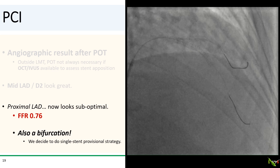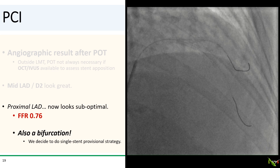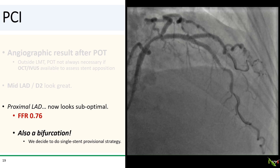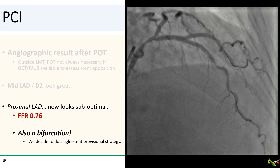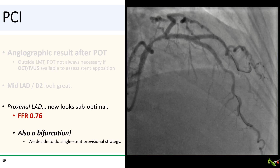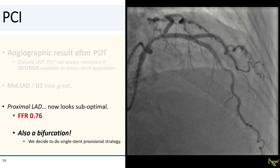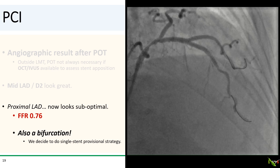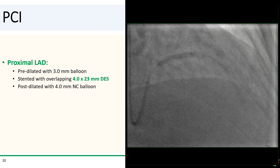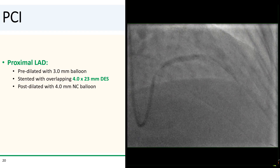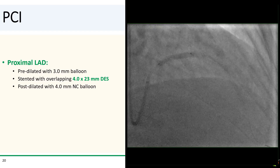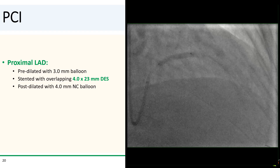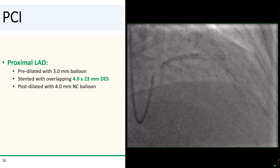So we did FFR, which was positive at 0.76, and we decided that the proximal LAD also needed to be treated. The proximal LAD was also a bifurcation, and D1 was quite large. We decided to see whether we could get away with a single stent provisional strategy in the proximal LAD. So we pre-dilated the proximal LAD with a 3.0 mm balloon, stented with a 4.0 by 23 mm DES overlapping with the mid-LAD stent, and post-dilated with a 4.0 mm NC balloon.